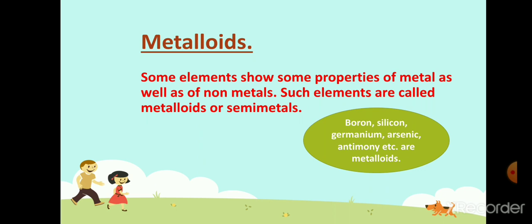Most of the elements are metals and most elements are solid at room temperature. Eleven elements, such as oxygen, nitrogen, helium, and hydrogen, are gases at room temperature. And two elements — mercury and bromine — are liquid at room temperature. Mercury is a metal and bromine is a non-metal; they both are liquid at room temperature.